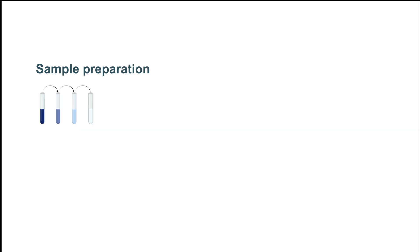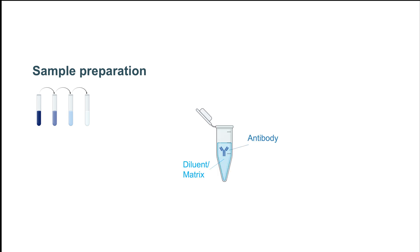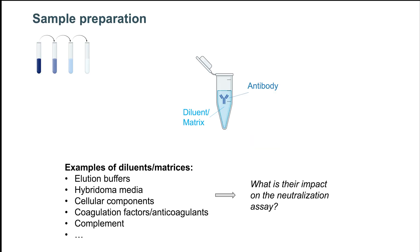When working with the test samples, it is important to understand the nature of the article. Each sample, whether it is a purified antibody or serum, doesn't contain only the test article, but a variety of components that constitute what we call diluent or matrix. This can be an elution buffer for a purified antibody or cellular components for a blood sample, and it is important to know how these components interfere with the neutralization assay.